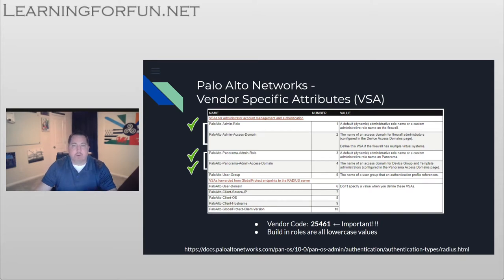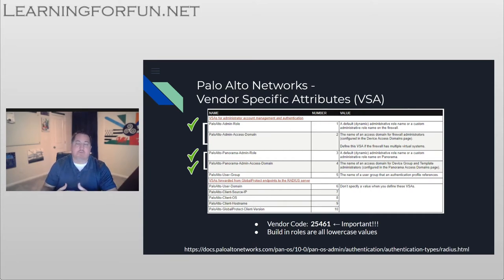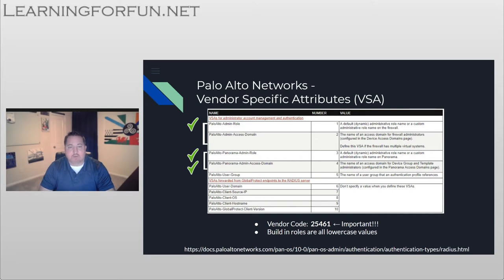The VSAs we're looking at today from the Panorama side are three and four. If you're doing firewall administration you'd also need one and two. You can send all of them regardless — it doesn't matter if you're sending to the firewall or Panorama; each device uses only the values it needs. VSA one is the admin role on the firewall itself; two defines which VSYSes they have access to. VSA three tells Panorama which admin role the user is configured for, and four is the access domain — either a Panorama admin or a device group and template.